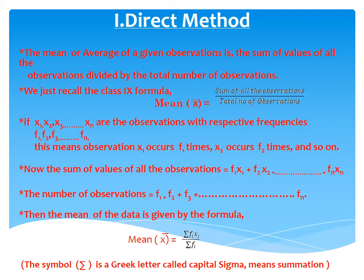this means the observation x1 occurs f1 times, x2 occurs f2 times and so on. To find the sum of values of all those observations, we have to multiply each observation with their respective frequencies: f1 multiplied with x1, f2 multiplied with x2, f3 multiplied with x3, till fn multiplied with xn. If you add all those values, we get the sum of values of all the observations, that is f1x1 + f2x2 + f3x3 + ... + fnxn. This is denoted by sigma fi xi.